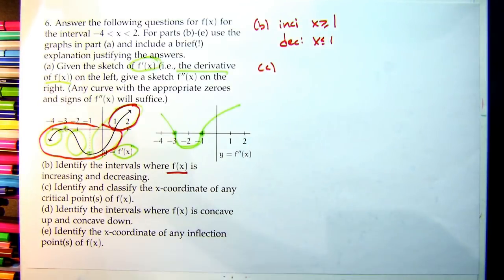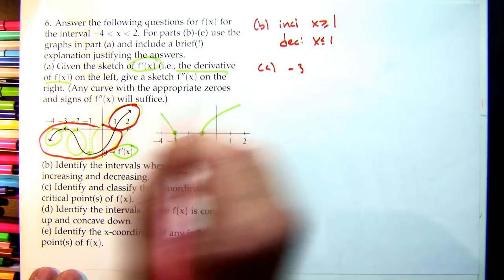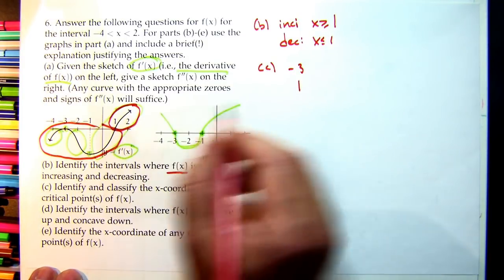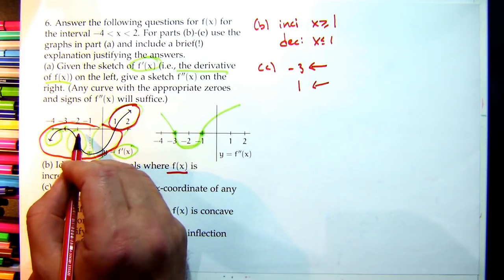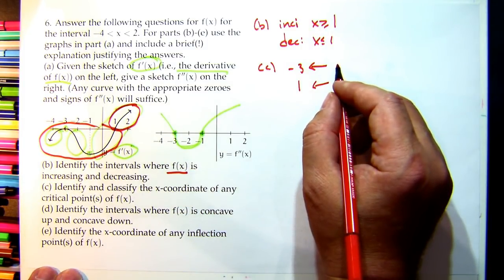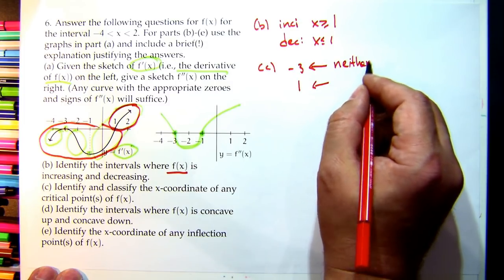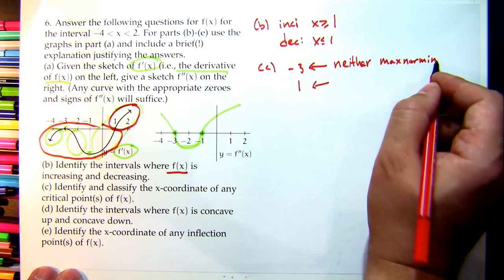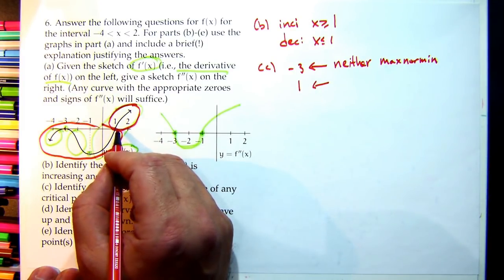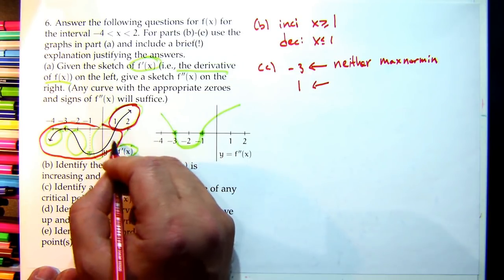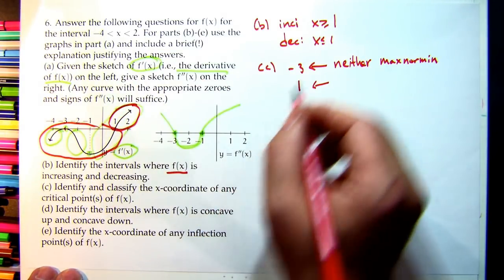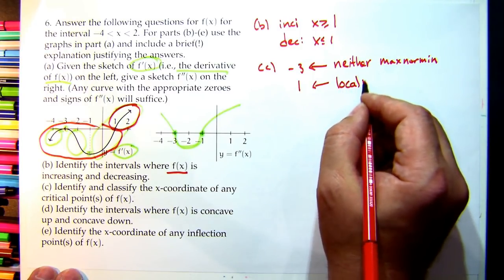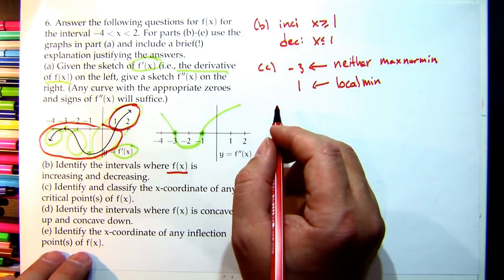Part C: find and classify critical points. Critical points of f are where f' = 0: at x = −3 and x = 1. At x = −3, f' is negative on both sides (it doesn't change sign), so x = −3 is neither a local max nor min. At x = 1, f' goes from negative to positive (decreasing then increasing), so x = 1 is a local minimum.